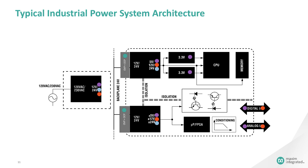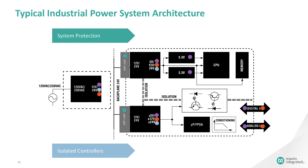In many industrial systems, protection from high voltages and currents have to be designed to withstand the rugged operating conditions. In general, industrial power focuses on four areas: system protection, isolated controllers and FET drivers, high voltage buck-boost modules, and power modules.